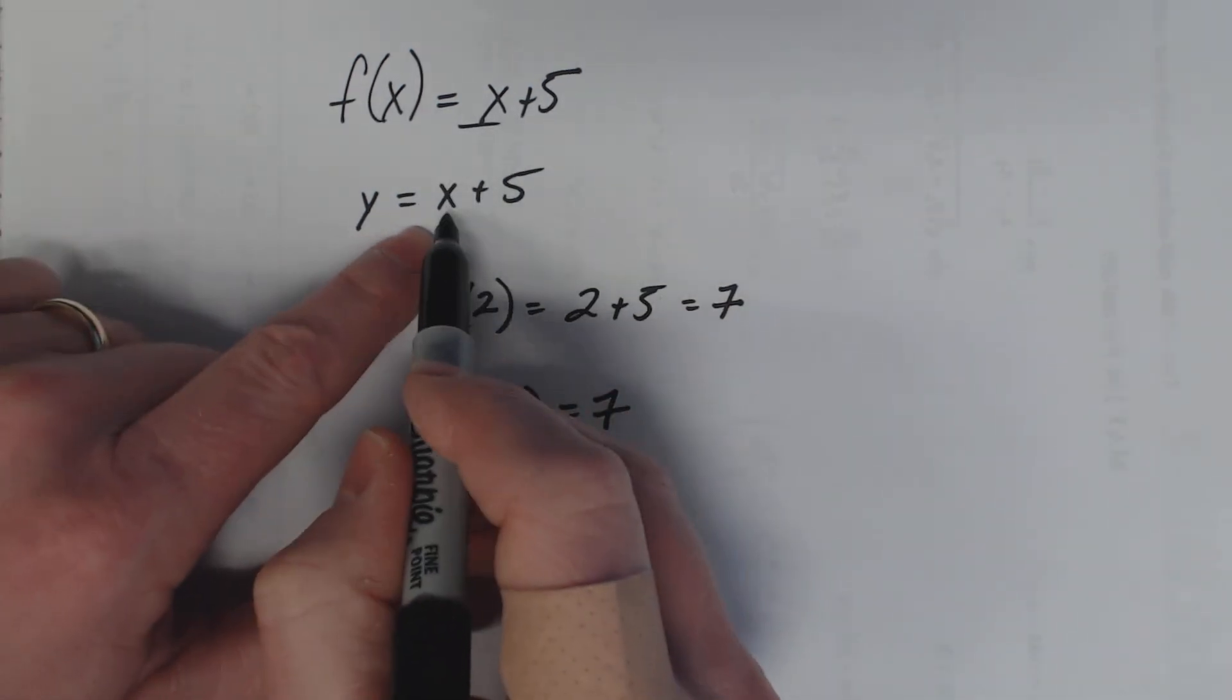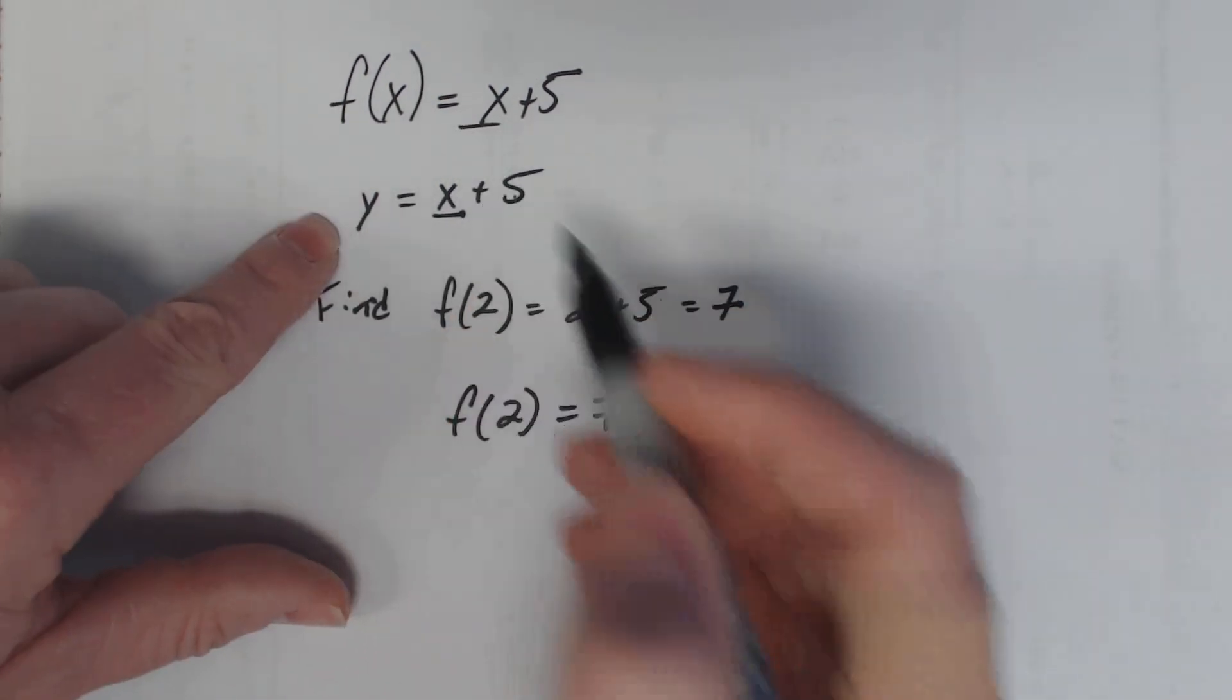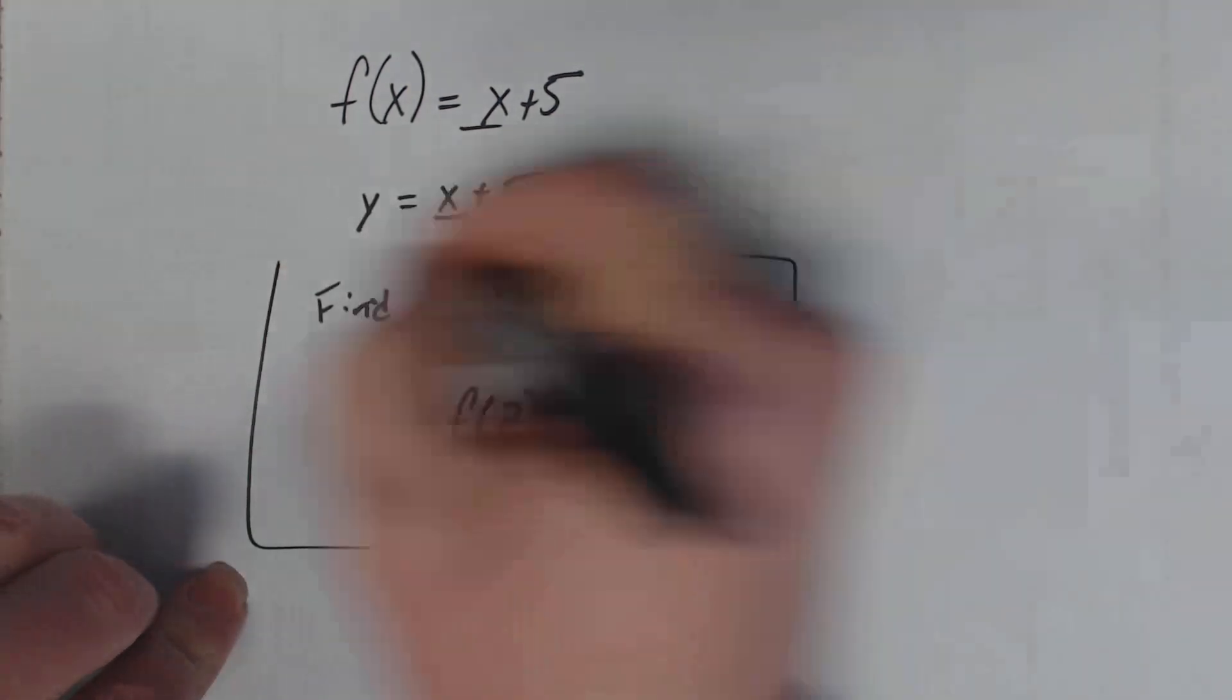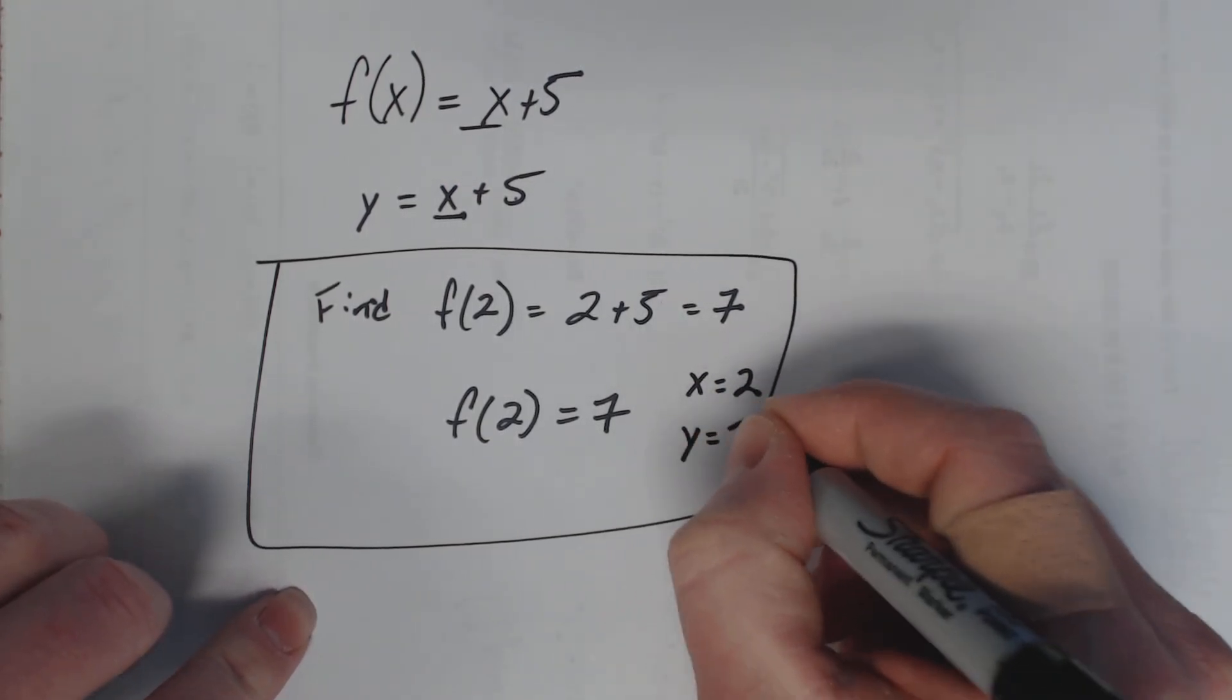So what that means is I plug a 2 in here. 2 + 5 = 7, or y = 7, because remember they're interchangeable. So if you think of this example here, the x value was 2. That means the y value was 7.